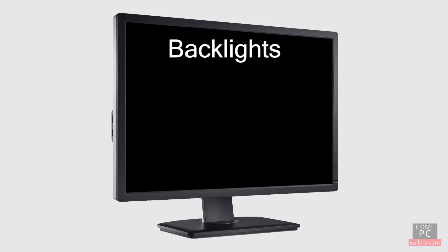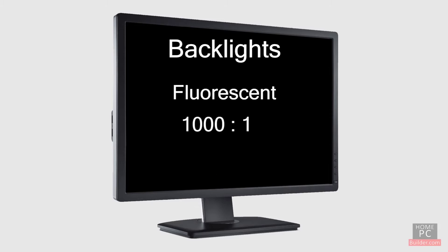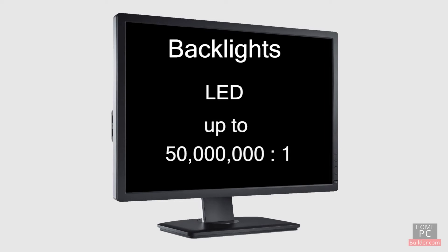There are two different types of backlights used in LCD monitors: fluorescent and LED. Fluorescent is the older type and is the same lighting used in energy-efficient compact fluorescent bulbs for your home. These allow for contrast ratios between 1000 to 1 and 100,000 to 1. LED backlights allow for up to 50 million to 1 contrast ratios. These numbers are a little fudged by manufacturers, but LED backlights do allow for much better contrast.